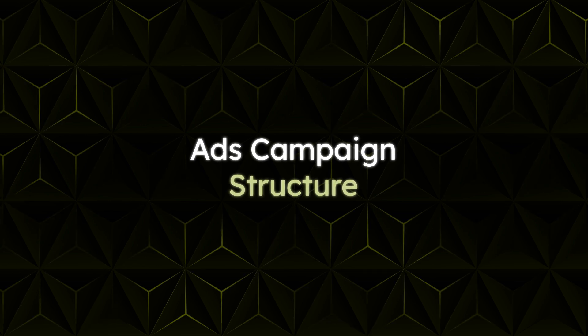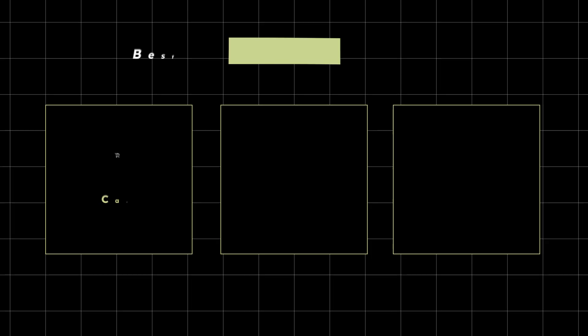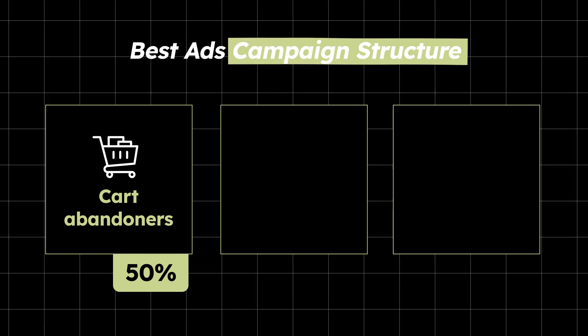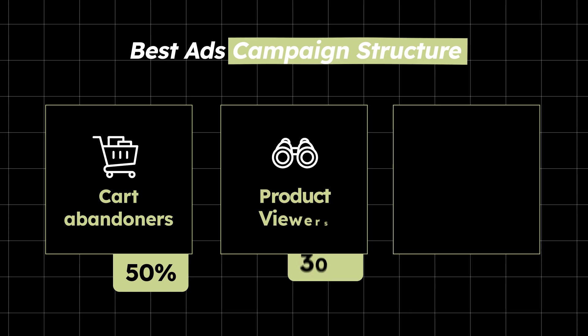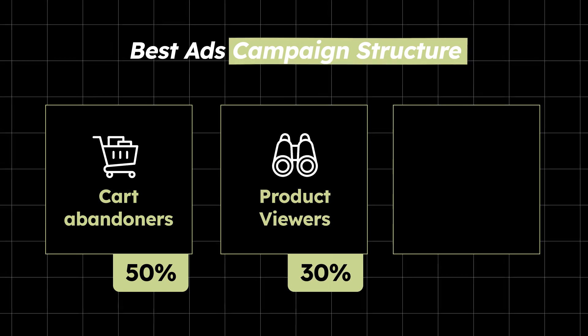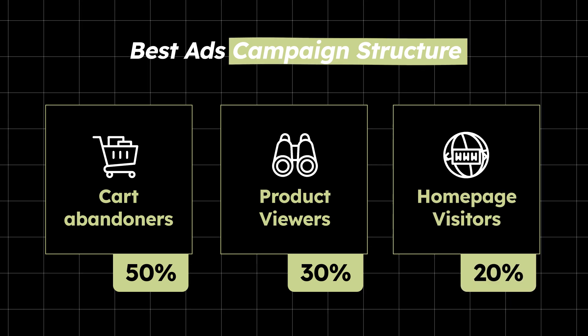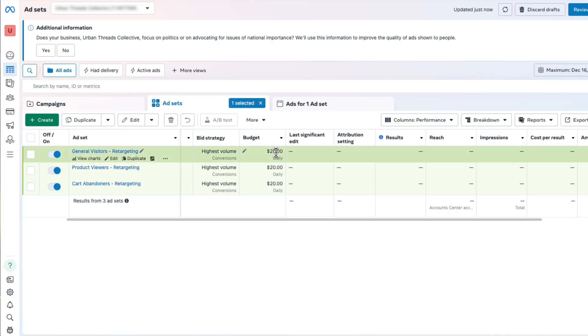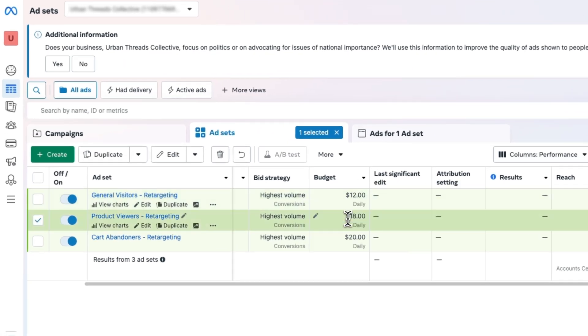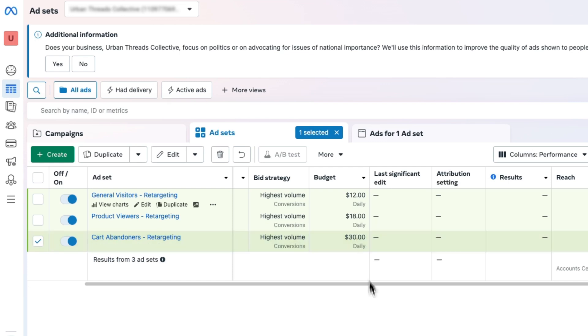Just as a chess master plans several moves ahead, winning back customers requires careful strategy with every dollar spent. Using best practices, allocate 50% of your budget to cart abandoners — they're your hottest prospects. Then assign 30% to product viewers since they've shown interest and need a nudge. The remaining 20% is reserved for general visitors. In practical terms with a $60 ad set budget: that's $30 for cart abandoners, $18 for product viewers, and $12 for general visitors. Save these numbers to draft.